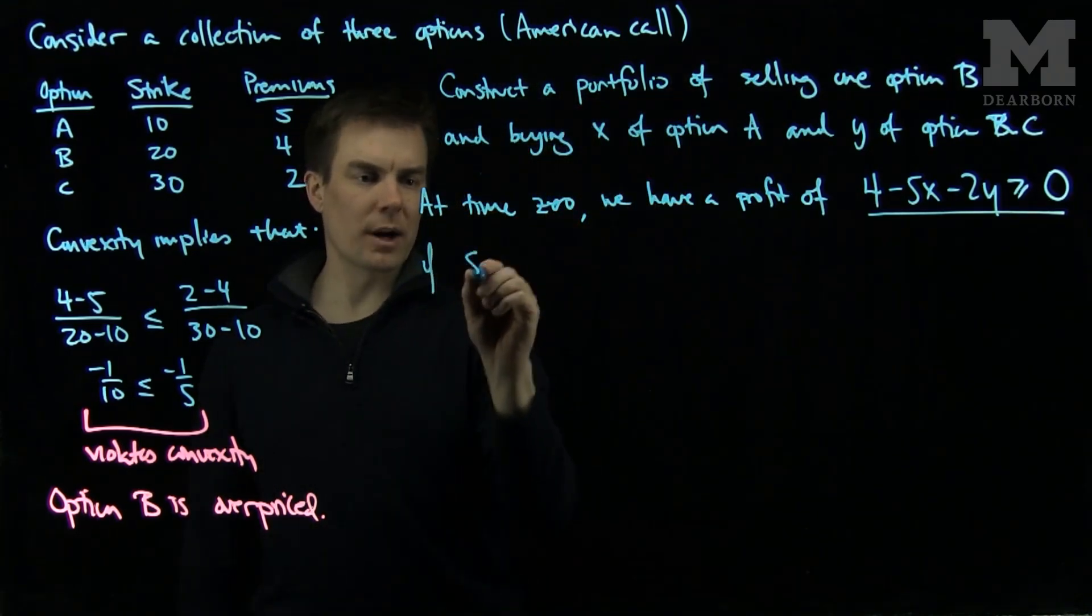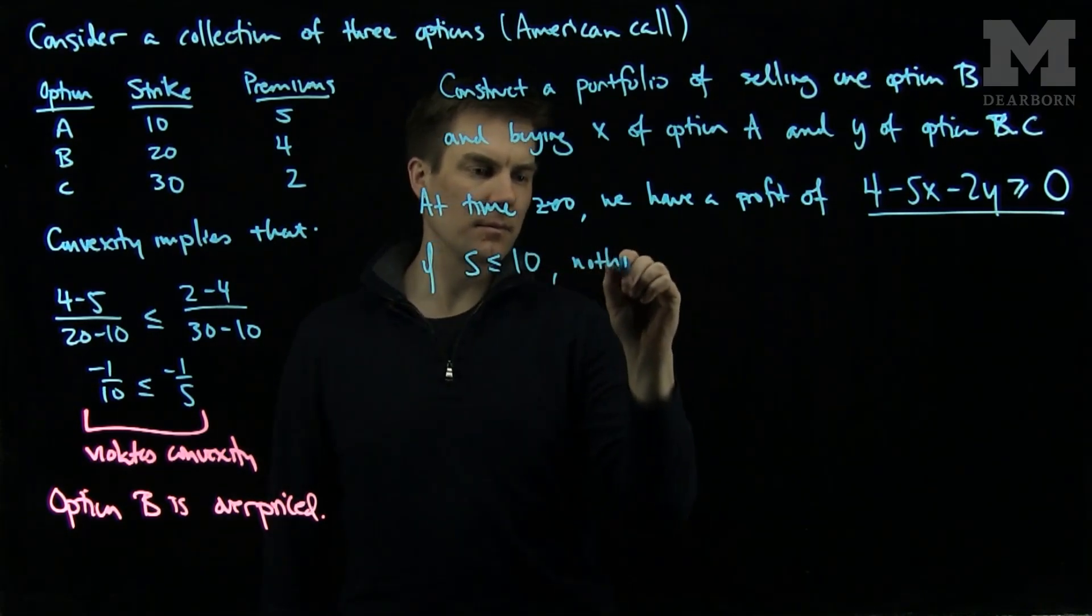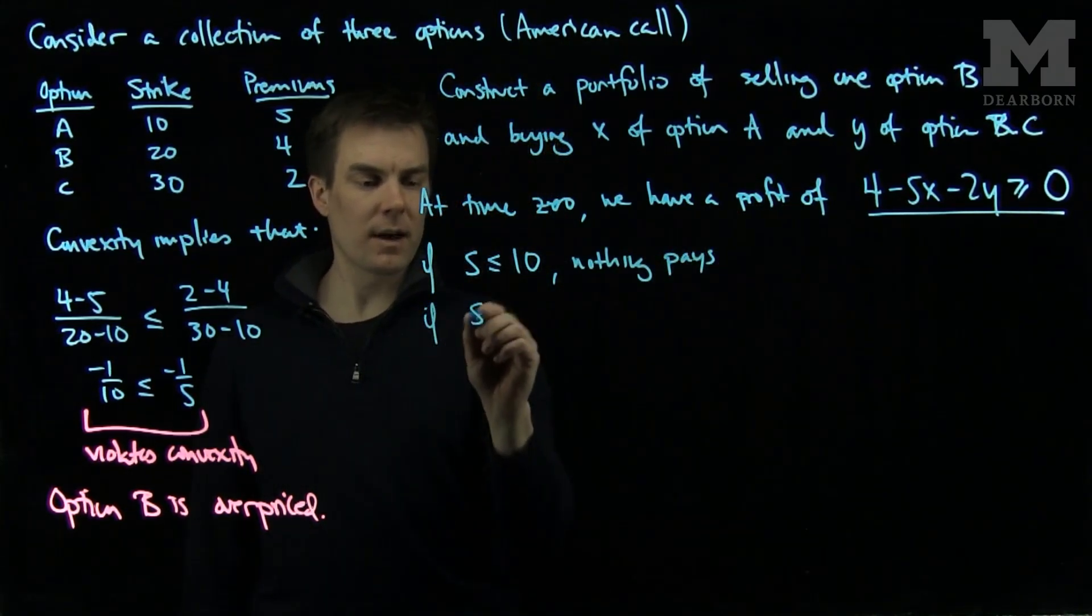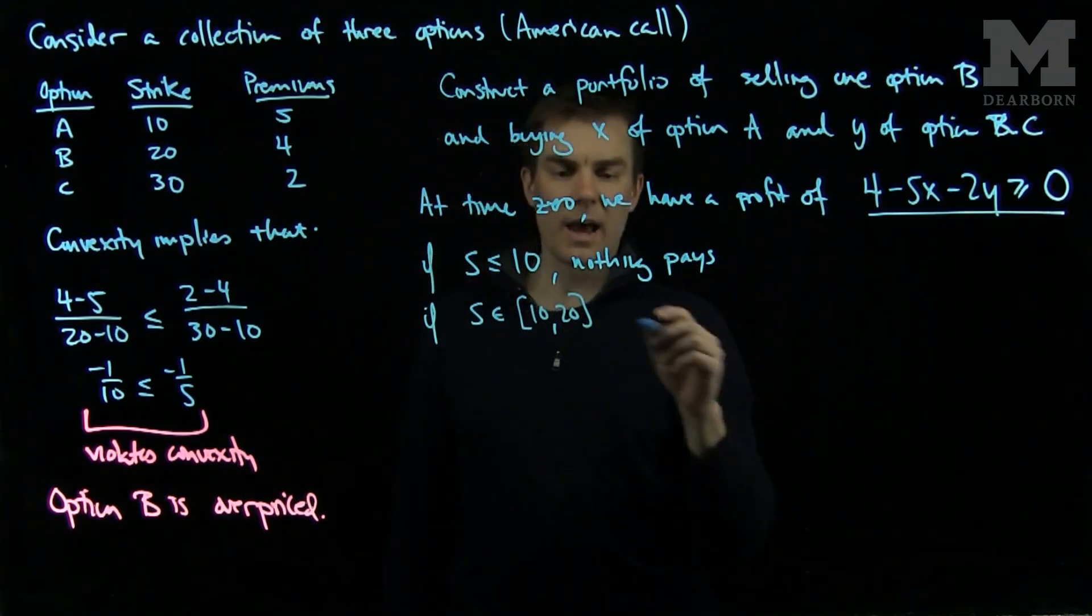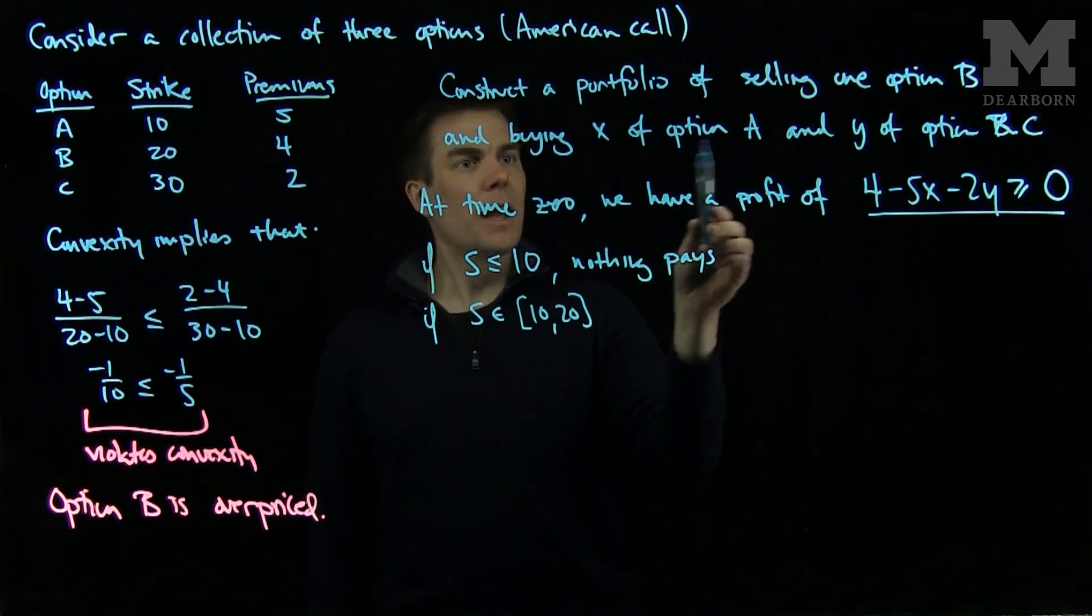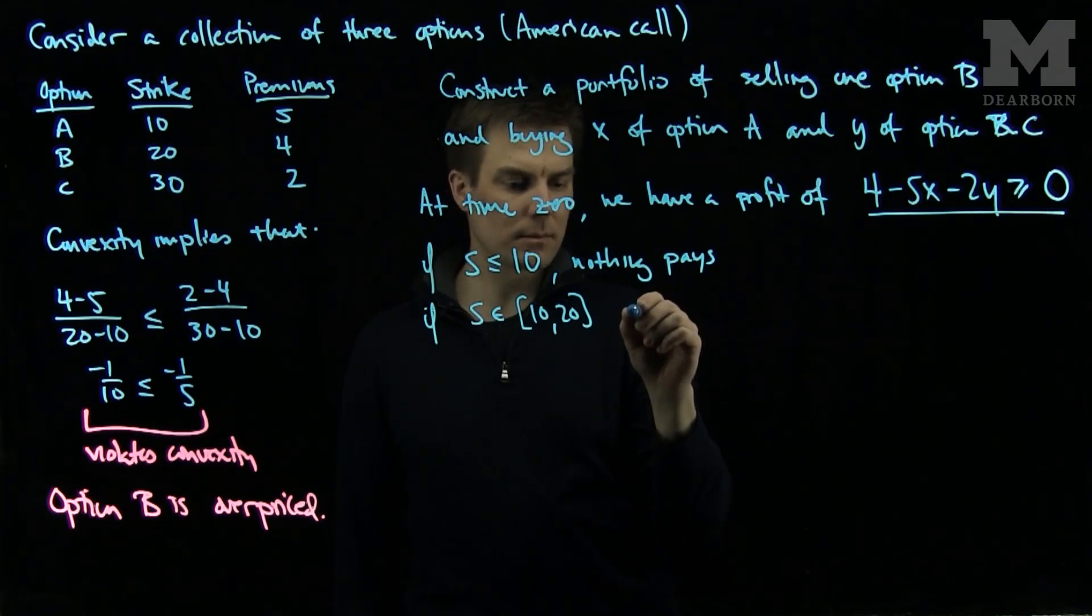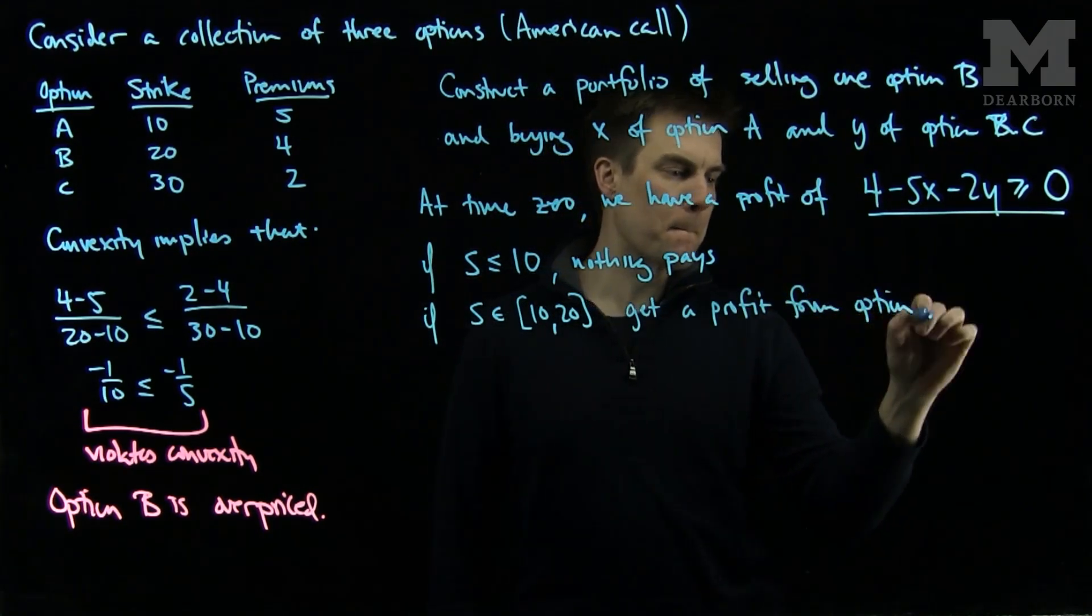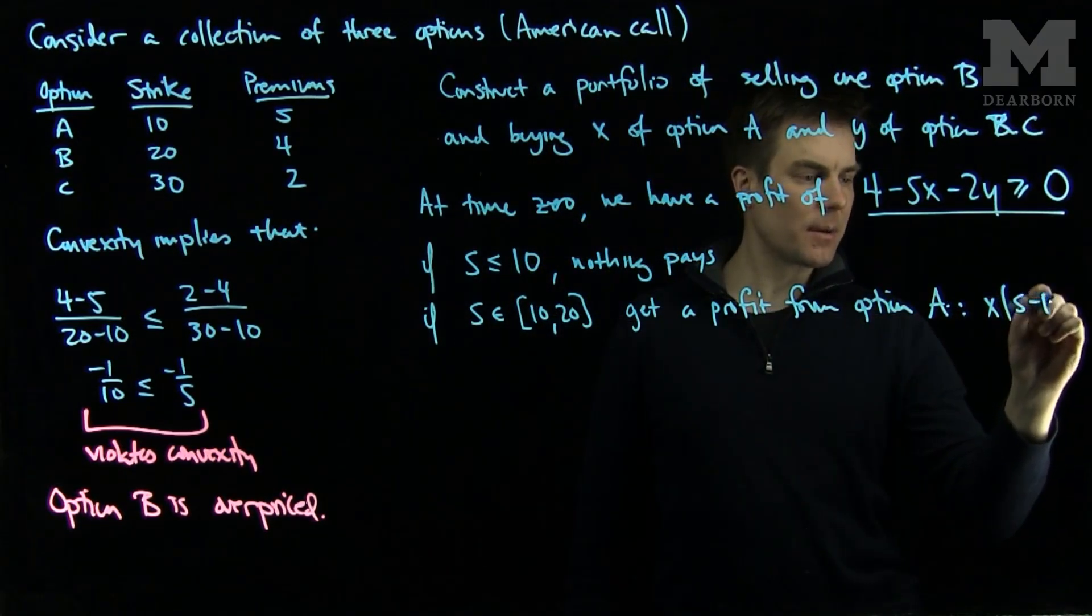Now, if the stock price is less than or equal to 10, nothing pays and our profit remains the same. If S is in the interval between 10 and 20, then our profit will increase because we bought option A, and option A can now be exercised to make a profit. So we will get a profit from option A of x times S minus 10.